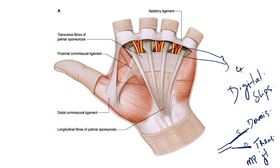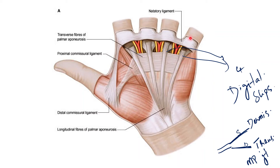To summarize: the distal end of the palmar aponeurosis represents a fan-like expansion which gives four digital slips. Each digital slip divides into a superficial slip and a deep slip. The superficial slip becomes continuous with the dermis, whereas the deep slip merges with the transverse metacarpal ligaments and blends with the fibrous flexor sheaths. This completes the attachments of the palmar aponeurosis proper.